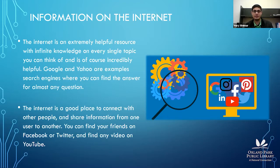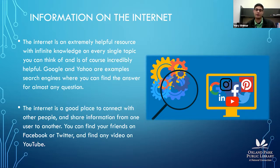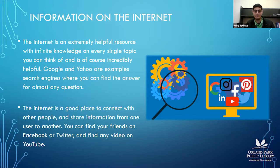The internet is a good place to connect with other people and share information from one user to another. A lot of people have Facebook or Twitter, and a lot of people don't — usually because of internet privacy concerns. They don't want a Facebook or Twitter account, they don't want to put their information out there, they don't want people to be able to look them up.